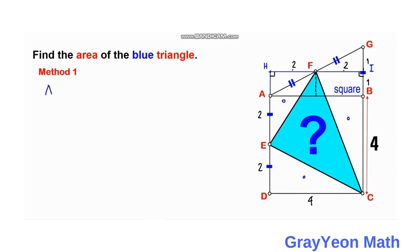The area of the shaded region is equal to the area of the rectangle, where the length is 4 and the height is 5. We need to deduct the 3 triangle areas. So one-half — for triangle HFE — one-half times the base times 2 times the height. The height should be 1, so the height is 3.